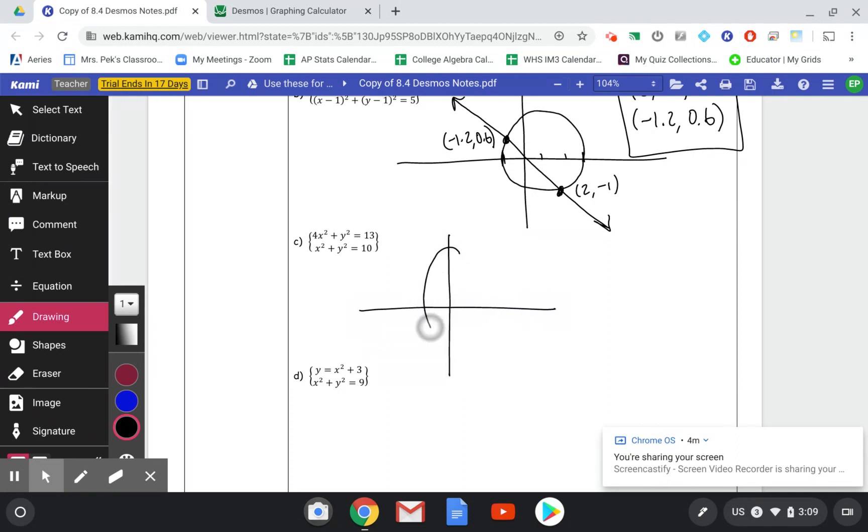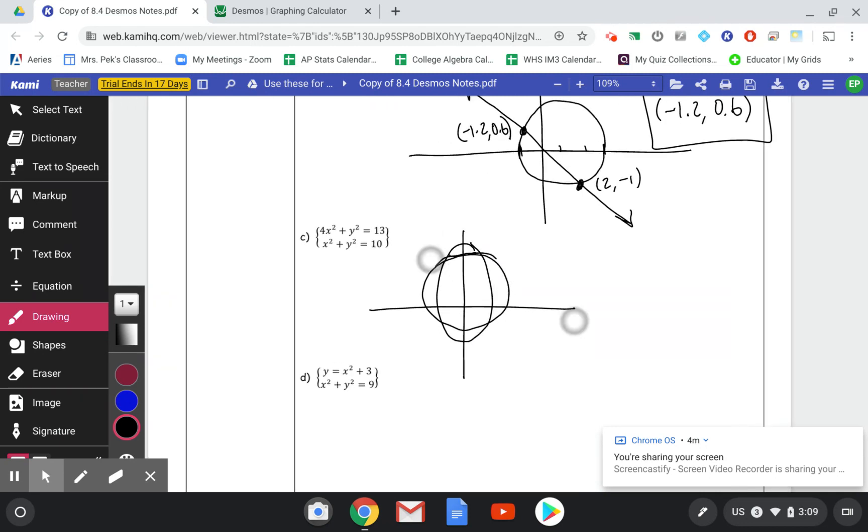So we have an ellipse. So again, write out your solutions. 1, negative 3, negative 1, negative 3, and box them up.